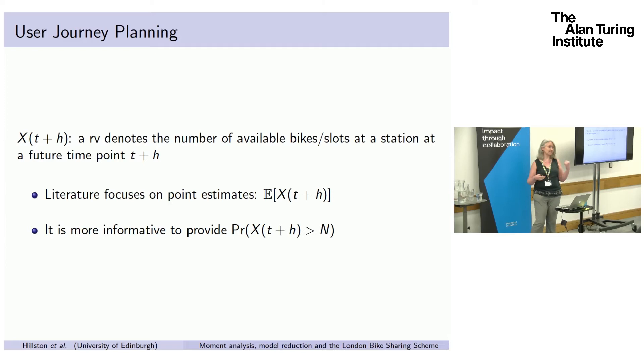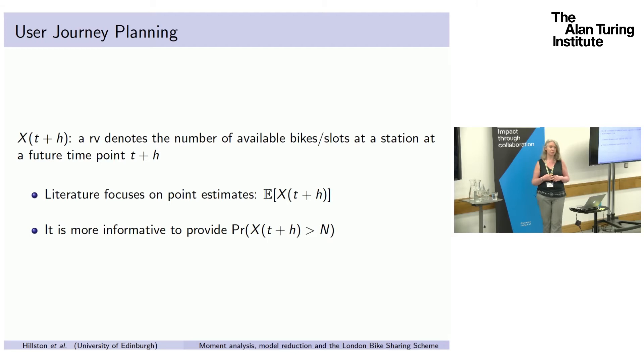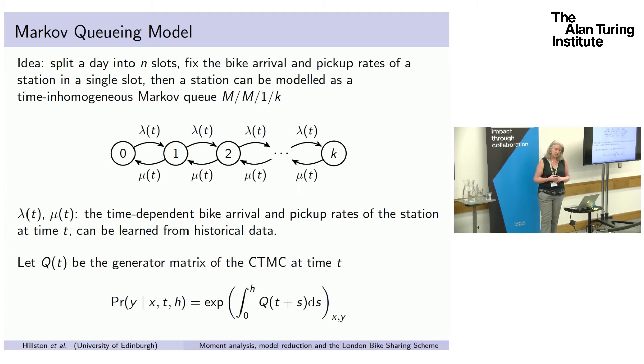We thought you can do something better if you actually build a stochastic model and then aim not to calculate the expectation but instead build the probability distribution, so you can make predictions of what's the chance there'll be three bikes because I want to go with my two friends.